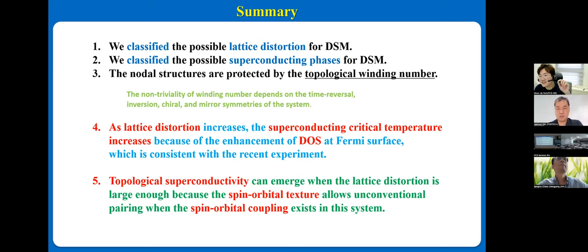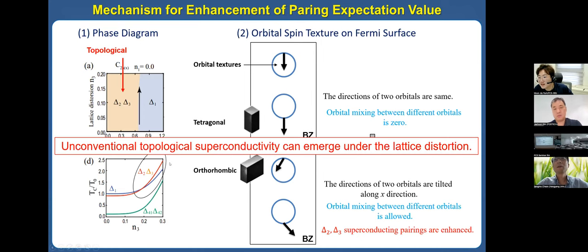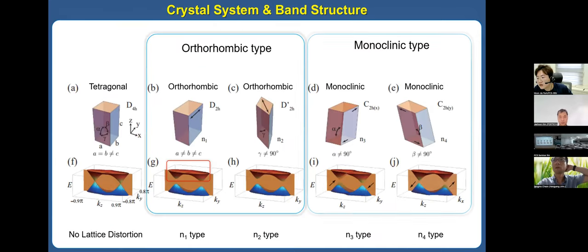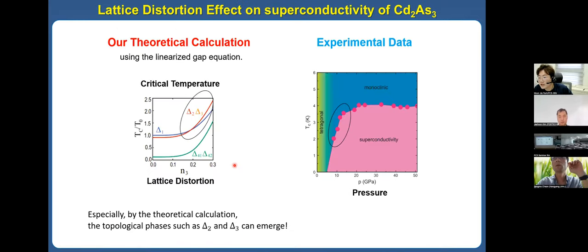Also another question: you found that Δ₂ and Δ₃ have the same critical temperature — do they fall into the same irreducible representation? No, that is an excellent question. Actually Δ₂ and Δ₃ are different — they are included in different representations depending on their crystal system. It is natural to guess that the critical temperature should be different for Δ₂ and Δ₃. But in that calculation, we only assumed a single type of minimal lattice distortion. In this case, the critical temperatures are degenerate. But if we put more distortion, we can distinguish them. In my paper, we have calculated that.